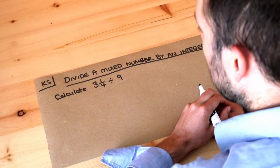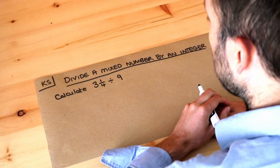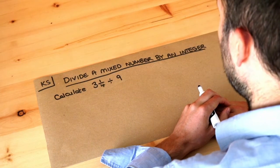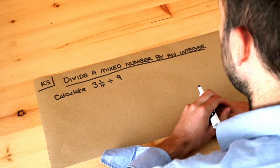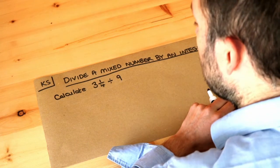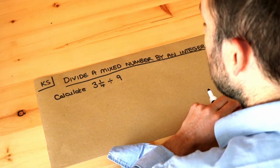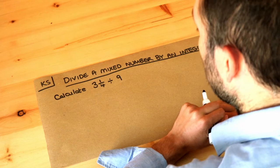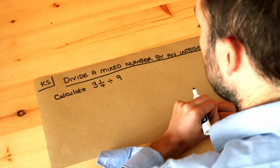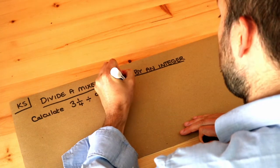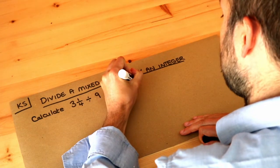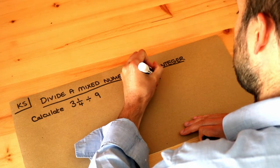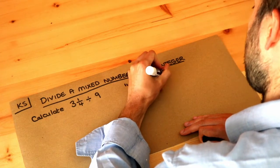Hello and welcome to this Dr. Ross Maths key skill video on dividing a mixed number by an integer — integer just means whole number. Hopefully you've already seen the video on how we divide fractions. Remember, the method we use is keep, change, flip.